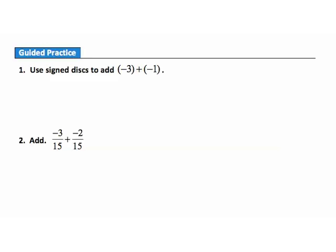Now it's time to check your understanding of adding numbers with the same sign. Pause your video player and answer these guided practice questions. When you're done, hit play to see how you did. Question 1: use sign disks to add negative 3 plus negative 1. With sign disks, we have three negatives and then one more negative — so altogether four negatives. Negative 3 plus negative 1 gives us negative 4.